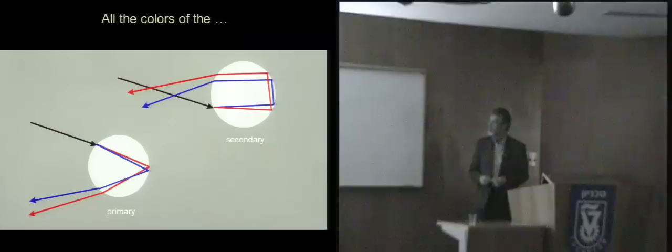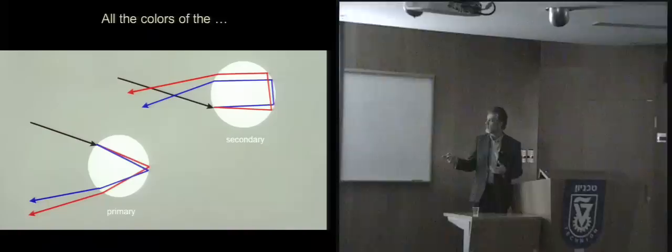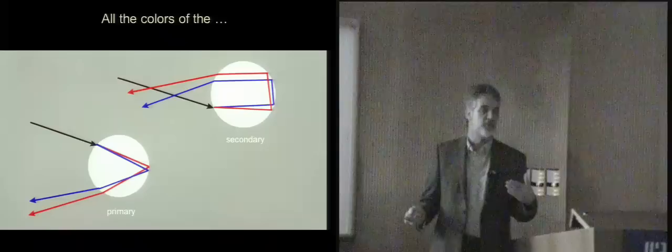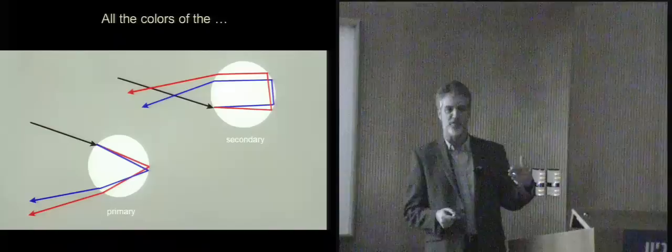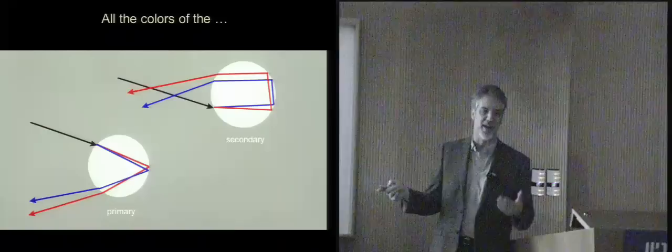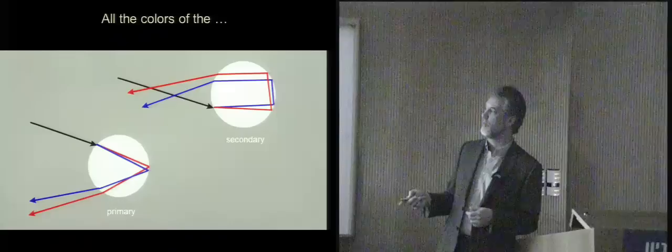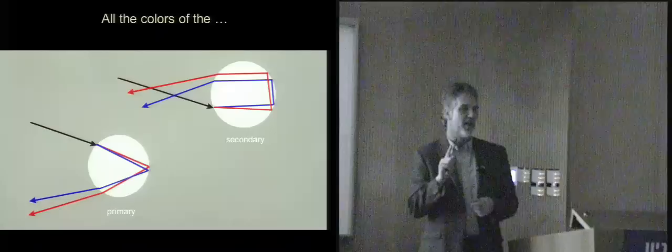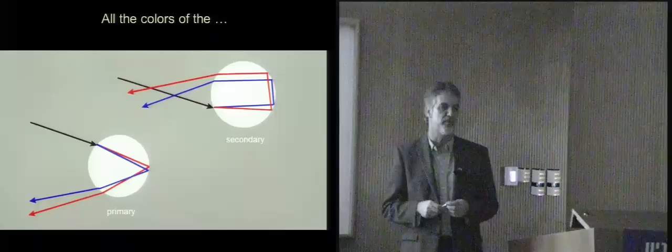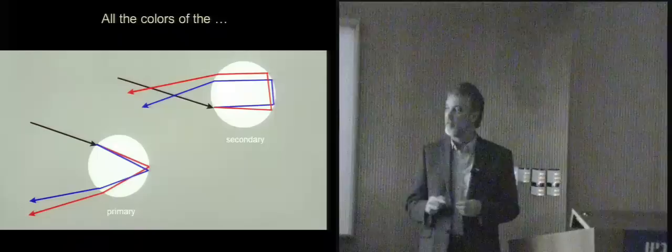Some people say this is a total internal reflection at the back surface. If that were true, rainbows would be extremely bright — but they're not, we lose a lot of light. What may be happening is it's a reflection very near the Brewster angle, so the reflected light is very highly polarized. And so the rainbow light is actually very highly polarized — I have a picture to show that in a few minutes.